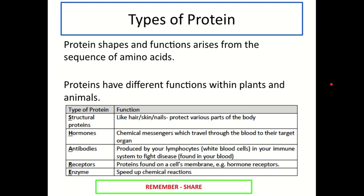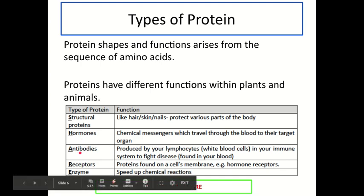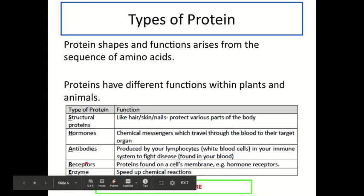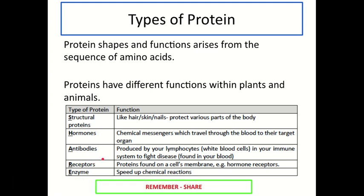The five types are: structural, hormones, antibodies, receptors, and enzymes. Structural proteins are found in places like your skin, hair and nails, and protect various parts of your body, or are found in the structures of cells. Hormones are chemical messengers which travel through the blood to their target organs, and we'll come back to these in Unit 2. Antibodies are produced by lymphocytes — white blood cells — in your immune system in order to fight infectious pathogens. Receptors are proteins found on a cell membrane and combine things like hormones. And finally, enzymes speed up chemical reactions.